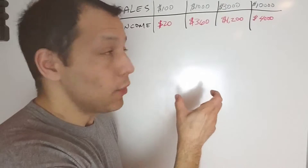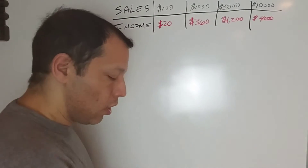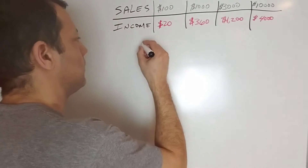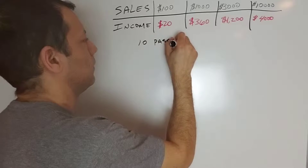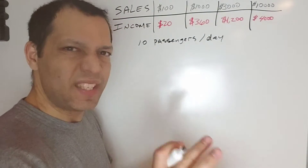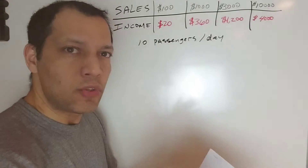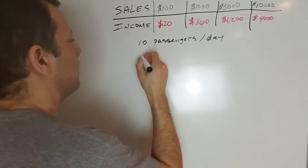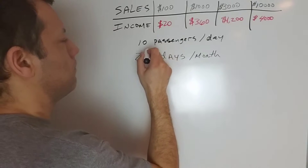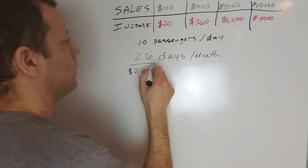This is a small portion of the compensation plan — it's more complicated than this, but these are the basics. So if you drive, let's say, 10 passengers a day as an example — 10 passengers a day — and let's say you drive six days a week, about 26 days a month. So 10 passengers times 26 days equals 260 passengers.